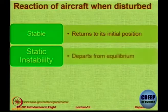Stability is of two types. There is static instability, in which the aircraft departs from equilibrium. You also have dynamic instability, in which not only does it depart, it also becomes more and more unstable. The initial tendency is static, and the final outcome is dynamic.